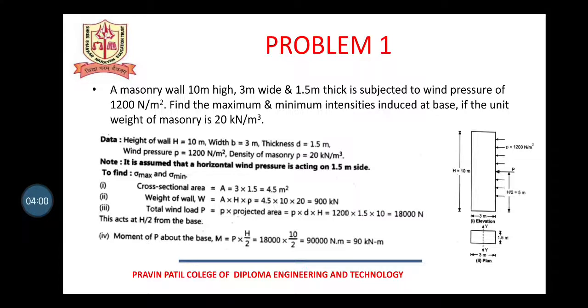Now total wind load, P into projected area. Projected area means this face on which your wind load acts, so I can say this is projected area. Now look, it is acting on 1.5 meter side throughout the height. The area will be 1.5 multiplied by 10, so you have projected area 1.5 into 10, and you have P value is 1200 N per meter square, so it becomes 18,000 N.